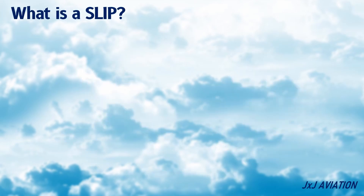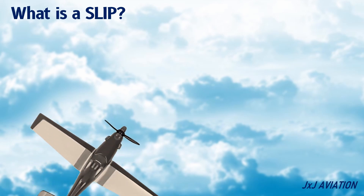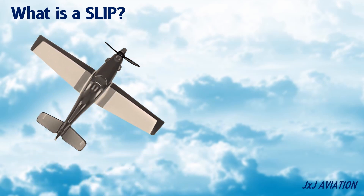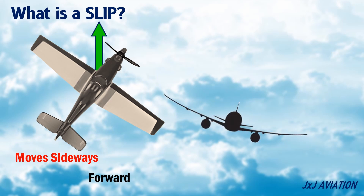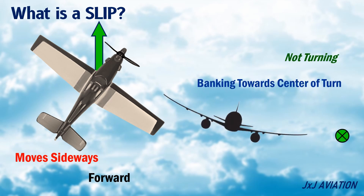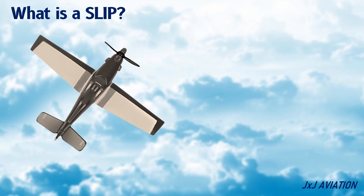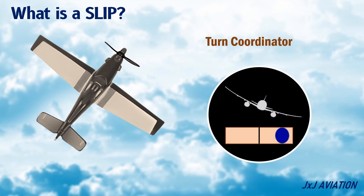What is a slip? A slip can be defined as a condition in which an aircraft moves sideways and forward, or if the aircraft is banking and not turning towards the center of a turn. This happens because of insufficient rudder input during a turn along with the aileron input. During a slip, the turn coordinator will look like this, which means more rudder input is required.